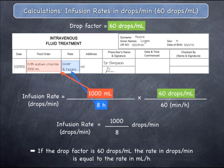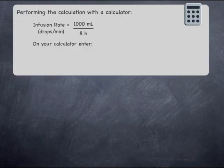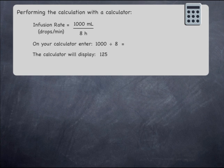Bearing this in mind, to perform the calculation with a calculator, enter 1000, divide it by 8, and then press equals. The calculator will display an answer of 125. The infusion rate should be set to 125 drops per minute.